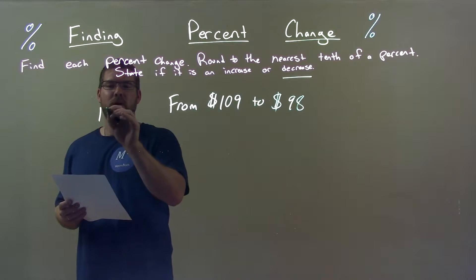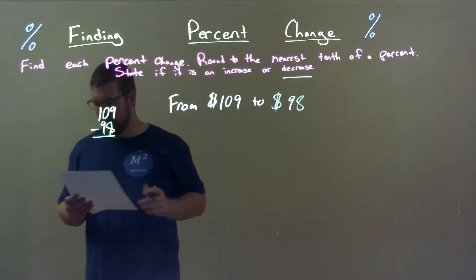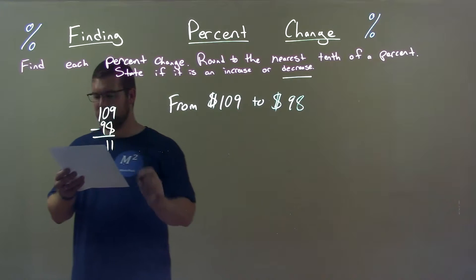Find the difference between the two. $109 minus $98. That's a weird looking eight, but it's okay. $109 minus $98 is a good old 11.